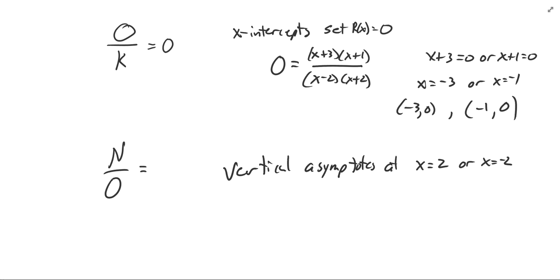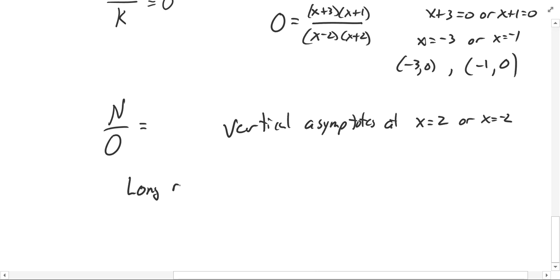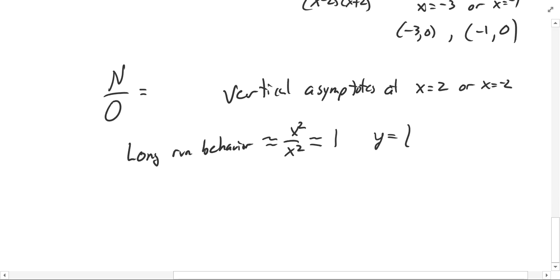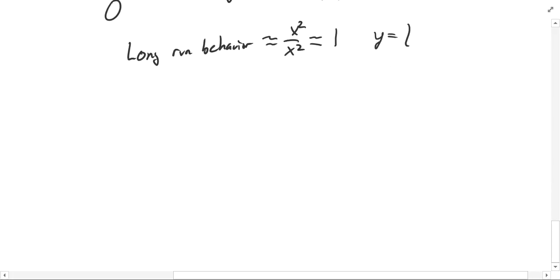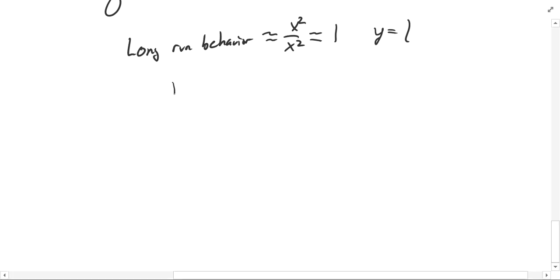Going back to the long-run behavior — we look at the leading degree. In the long run, I'm going to have x squared over x squared. From x squared plus 4x plus 3, the x squared on top is the most important thing. The x squared in x squared minus 4 is the most important part on the bottom as well. So essentially we're going to get 1. In the long-run behavior, the y-coordinate of this graph will approach 1.